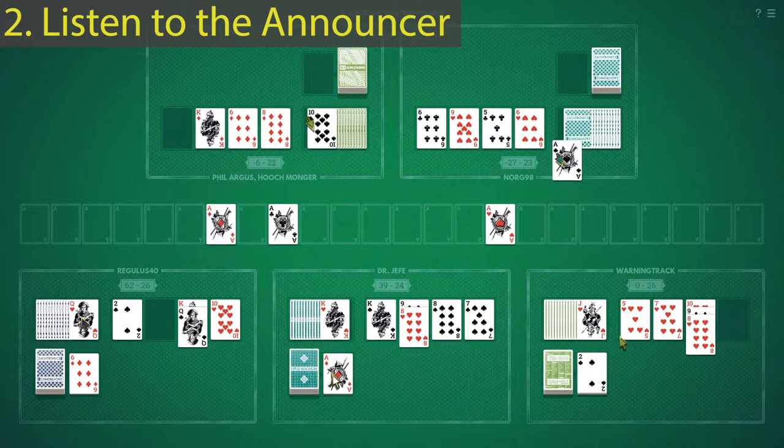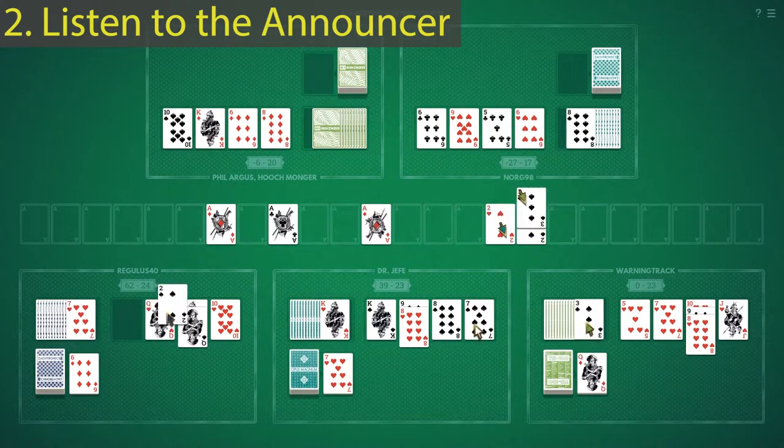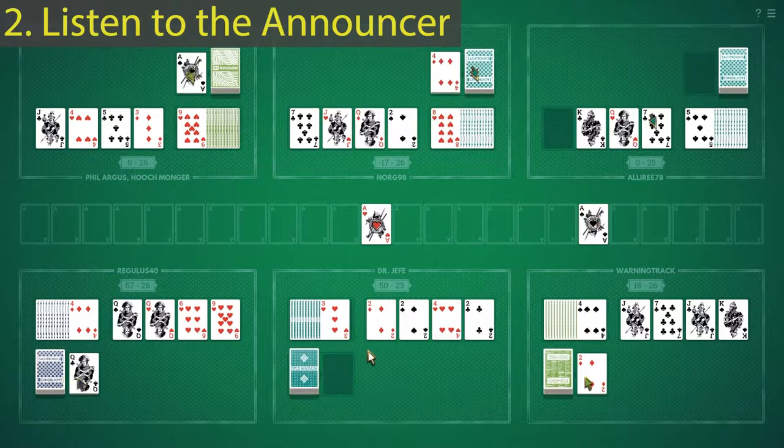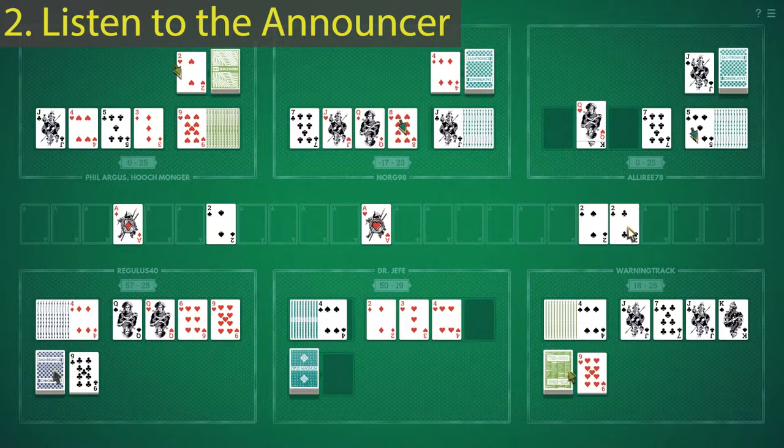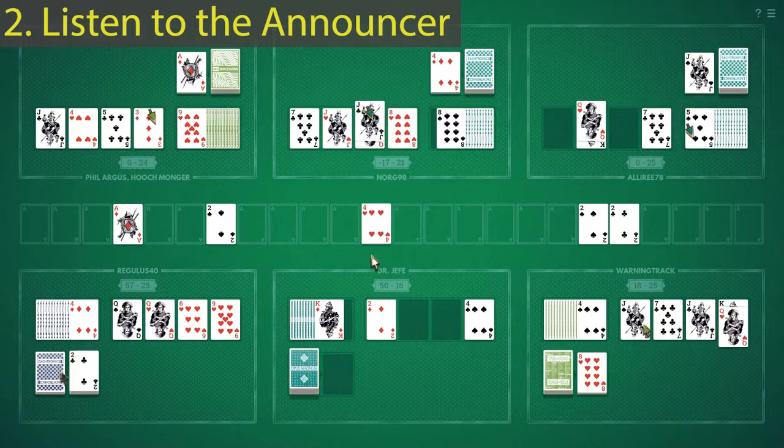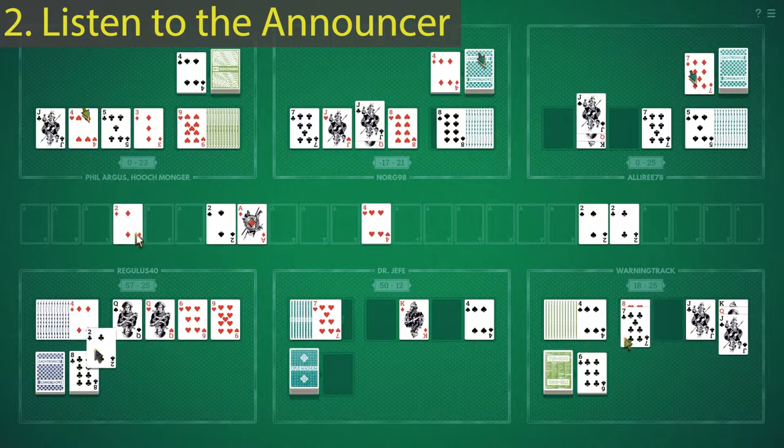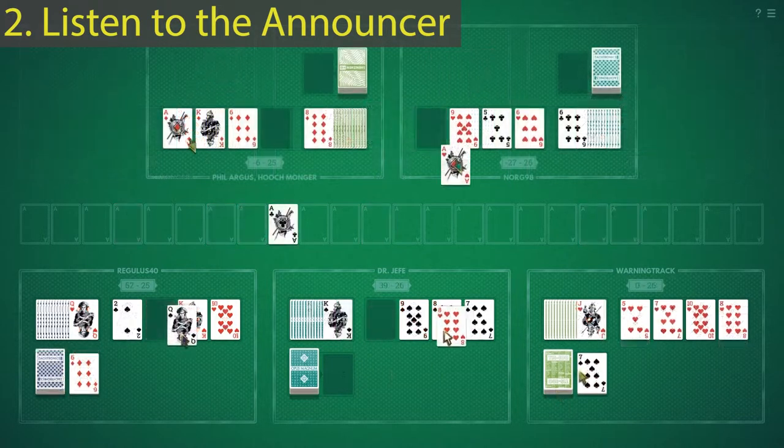The second tip is to listen to the announcer. The announcer will call out the suit of cards that have just been played. If you have a 2 or 3 of one of those suits, it's great to listen to that announcer so you know when to play them, especially if those cards are in your Nerds pile or in your stacks.